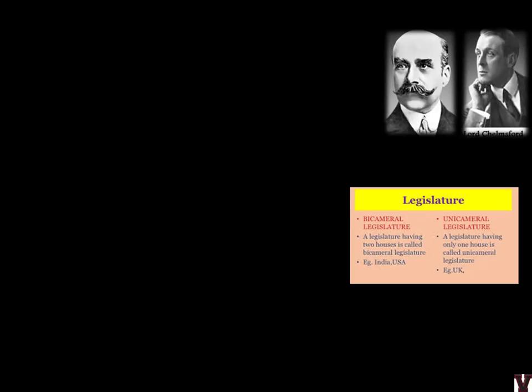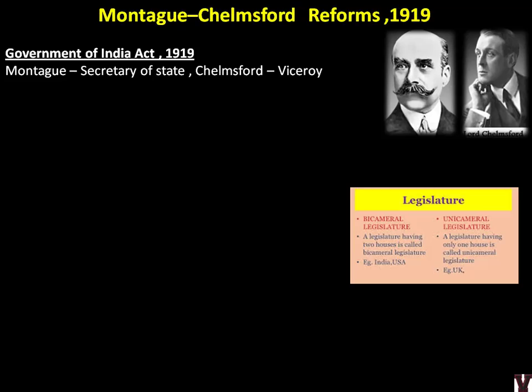Montagu was the Secretary of State and Chelmsford was the Viceroy — that is how such policies are named, like Morley-Minto where Morley was Secretary of State and Minto was the Viceroy. This is also called the Government of India Act 1919. The previous one was the Indian Councils Act 1909. We will do all the acts in detail in the administrative chapter. Lakshmi Kant is a very good source for all the acts from the 1773 Regulating Act to the 1947 Government of India Independence Act. At least one question about a particular act will come in the UPSC. As of now, the time period we are looking at is 1919 and the reform is the Montagu-Chelmsford Reform.